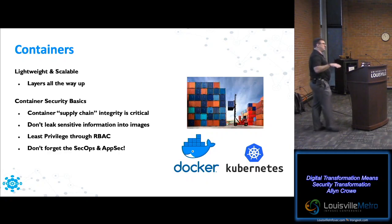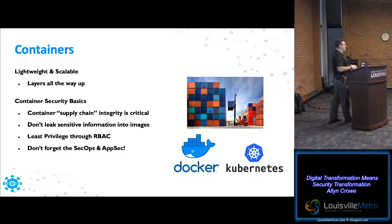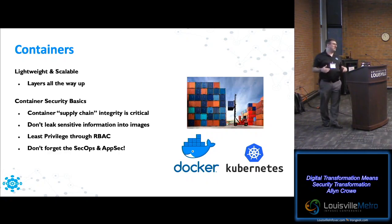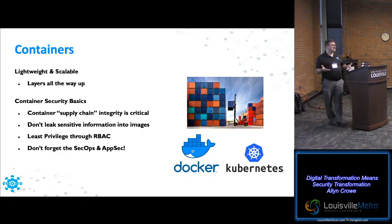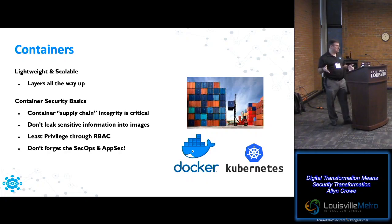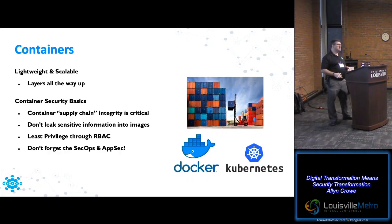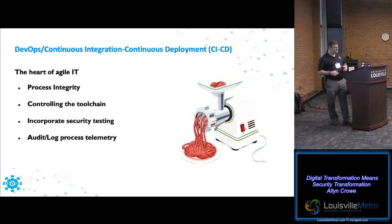Containers: you have a base image and layer containers on top to build out your system. Just like with APIs and code libraries, you need to trust where those different layers in your container environment come from. You need to secure those layers and secure your container environment. There's a supply chain that you have to make sure you're securing. Don't forget your SecOps, your AppSec, your least privilege and RBAC.